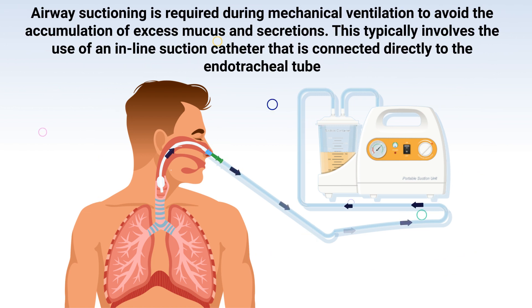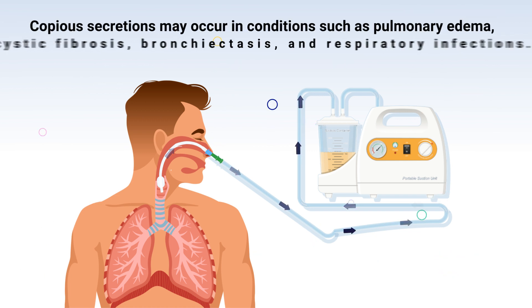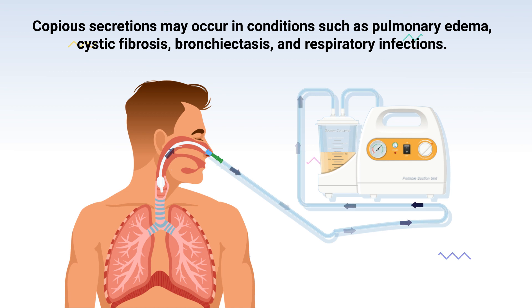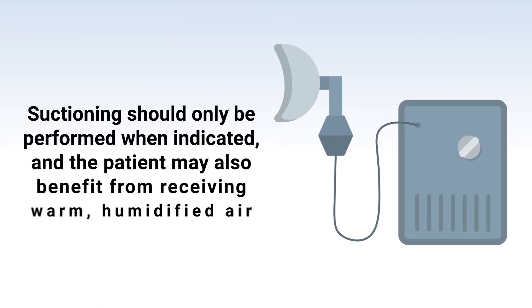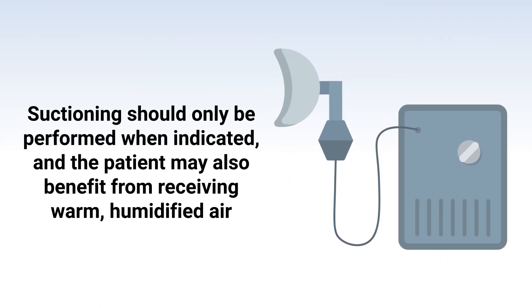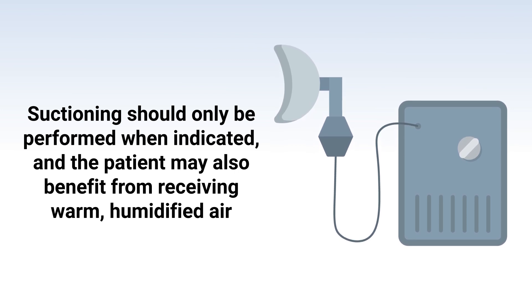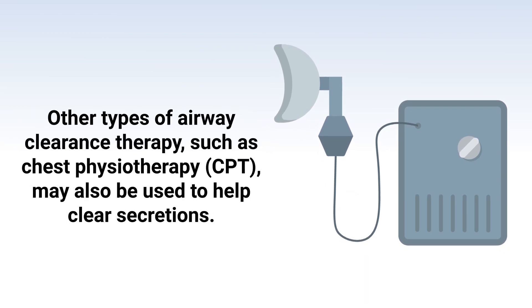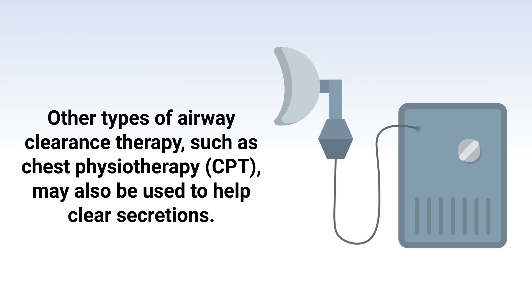Next on the list is secretion buildup. Airway suctioning is required during mechanical ventilation to avoid the accumulation of excess mucus and secretions. This typically involves the use of an in-line suction catheter connected directly to the endotracheal tube. Copious secretions may occur in conditions such as pulmonary edema, cystic fibrosis, bronchiectasis, and respiratory infections. Suctioning should only be performed when indicated, and the patient may also benefit from receiving warm humidified air. Other types of airway clearance therapy such as chest physiotherapy may also be used to help clear secretions.